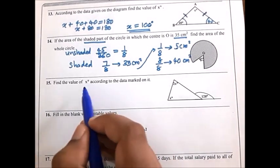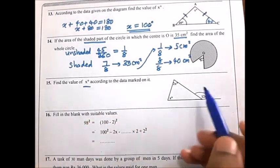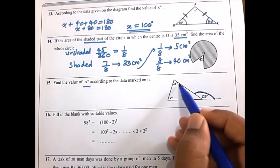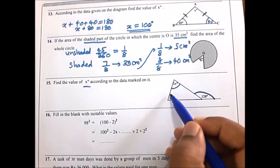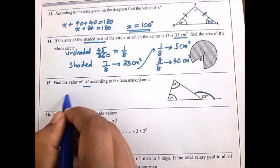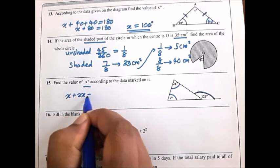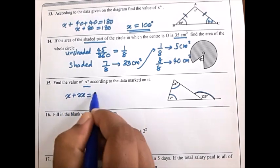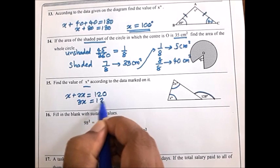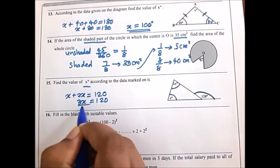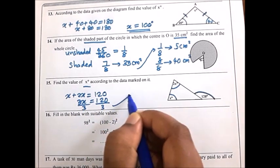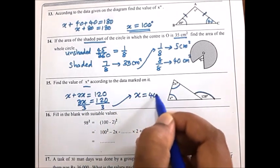Find the value of X according to the data. This exterior angle equals the sum of the interior opposite angles: X plus 2X equals 120 degrees. So 3X equals 120; divide both sides by 3; X equals 40 degrees.